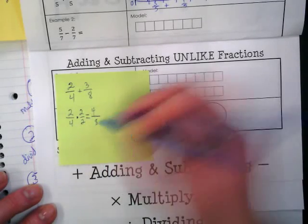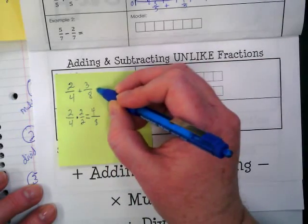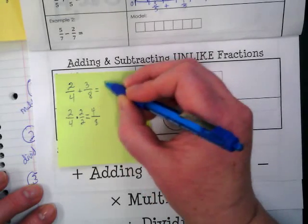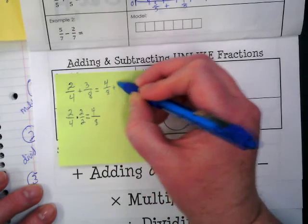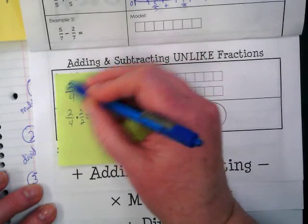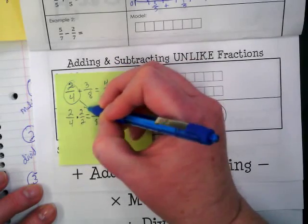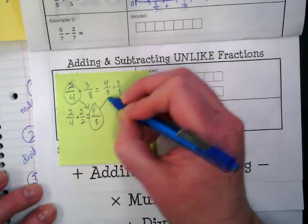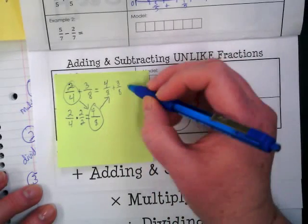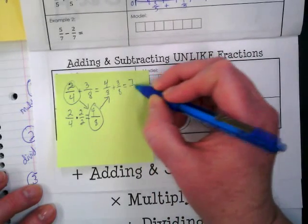Two times two is four. Four times two is eight. And I can go back up and change this to say four eighths plus three eighths. Because I took this and converted it to this and converted it to this. And now I've moved it to here. And that would look like seven eighths.